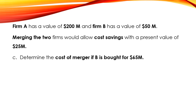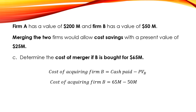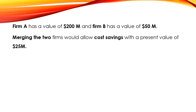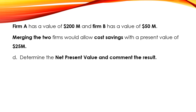For Part C, we determine the cost of the merger if Firm B is bought for 65 million dollars cash. The cost of the merger equals the cash paid minus the present value of Firm B: 65 million dollars minus 50 million dollars. So the cost of acquiring Firm B is 15 million dollars.